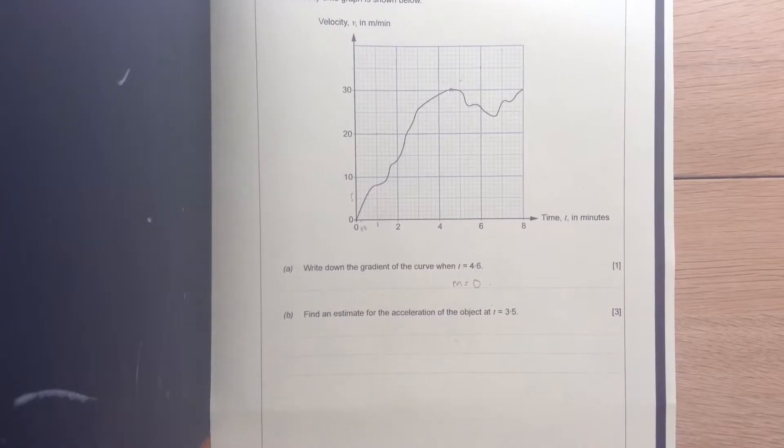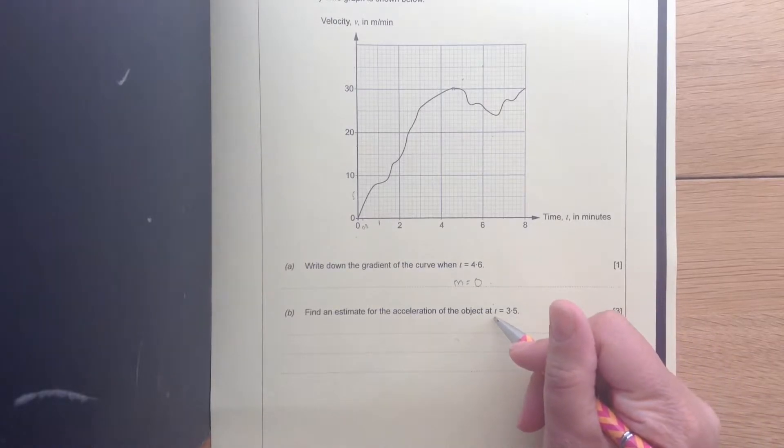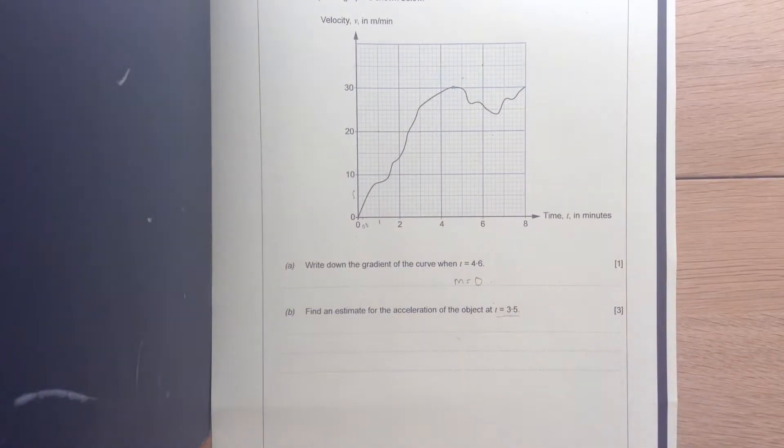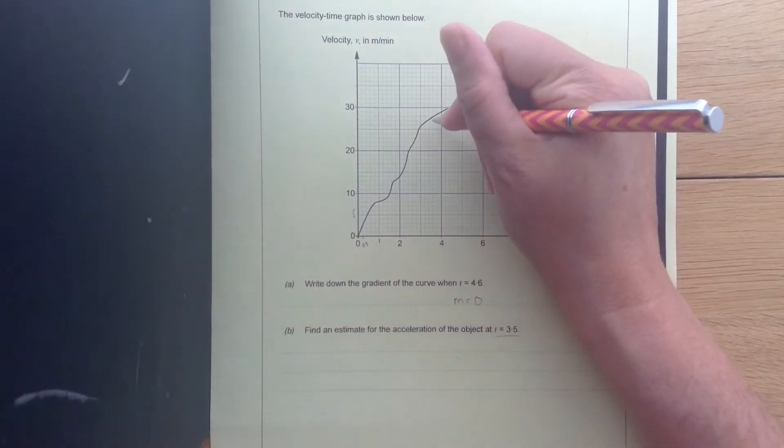Find an estimate for acceleration of the object at t equals 3.5. So what we need to do is find the gradient at the point t equals 3.5. So here we go then. There's 3.5 there.